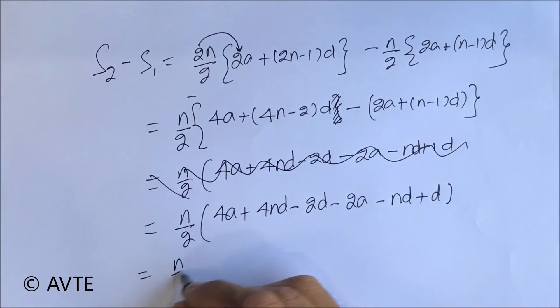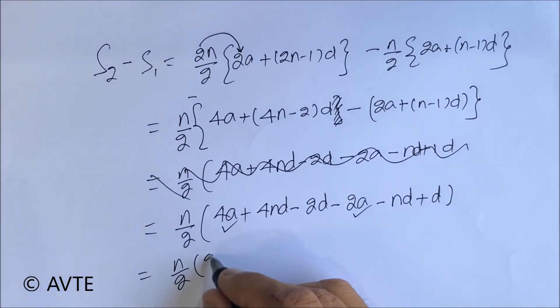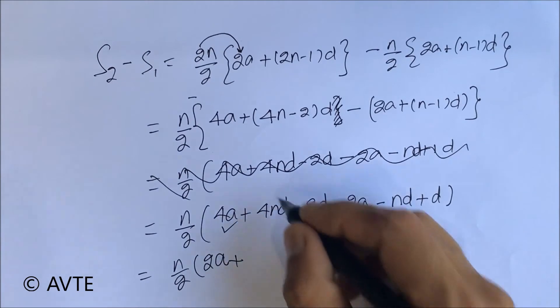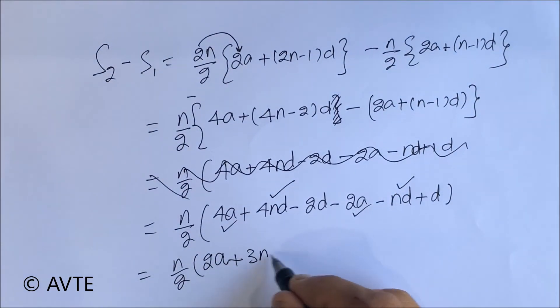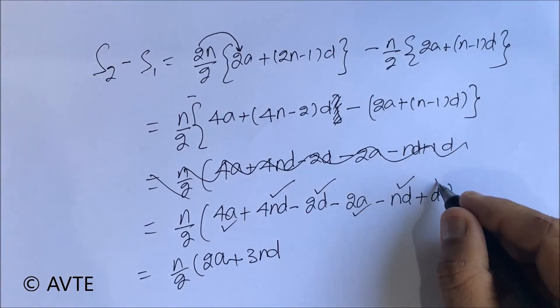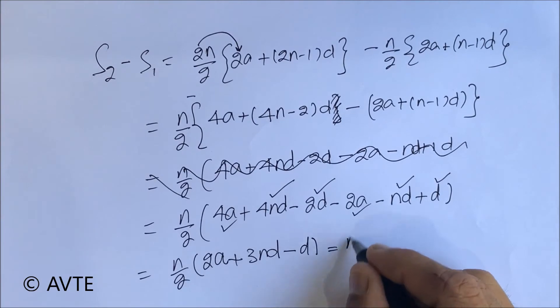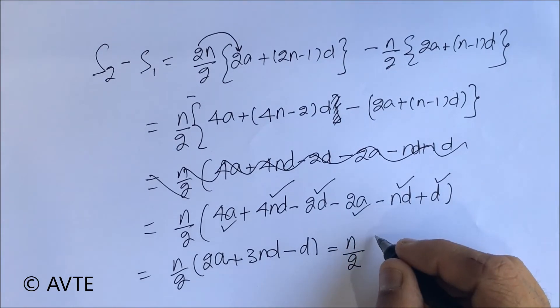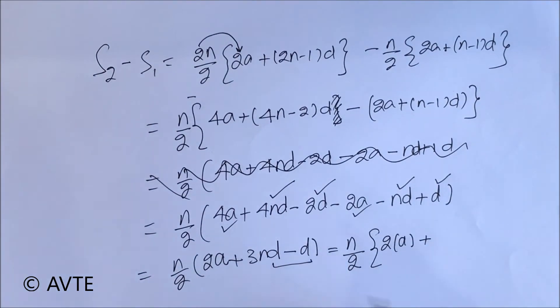And now, when we further solve this, 4a and 2a, we will be left with 2a. This 4nd minus nd will be left with 3nd. This minus 2d and plus d, we will be left with minus d. And further, when we arrange, we will be left with, and I am taking d common from these two terms.